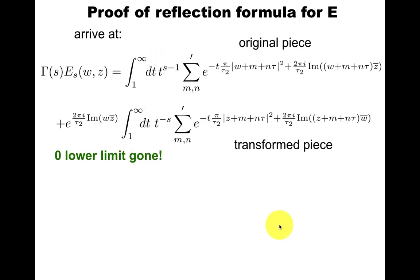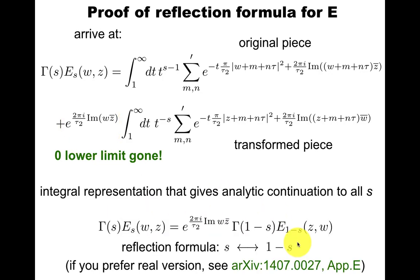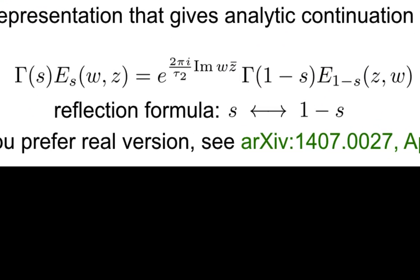Now we see that for s goes to 1 minus s, this is simply replaced by this. And these two things are now exactly the same. So you flip s and 1 minus s generate this factor. So in other words, just staring at this for a little bit, you see this reflection formula.